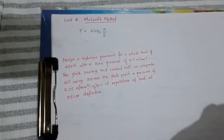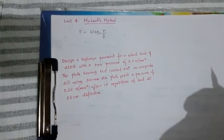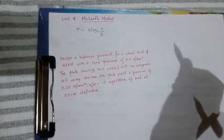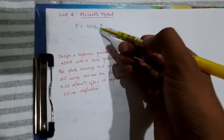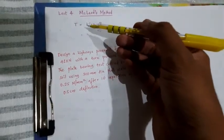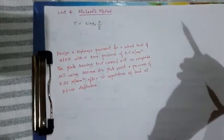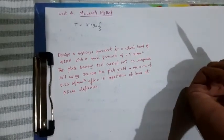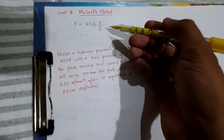Here Norman McLeod conducted an extensive repeated plate bearing test on airfield and highway pavements and developed a design equation using different plate sizes. Here the equation is T is equal to K into log base 10 P by S, where T is the thickness of gravel base or pavement, K is the base course constant, P is gross wheel load in Newton and S is total subgrade support in Newton.